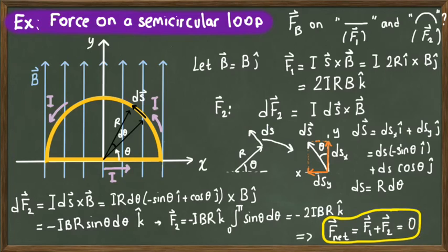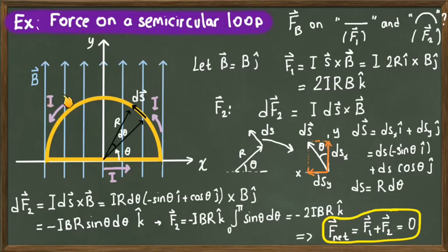By explicitly calculating the forces on the curved part and the straight part and adding them, we get zero net force on the closed current loop. This result is true for any uniform magnetic field.